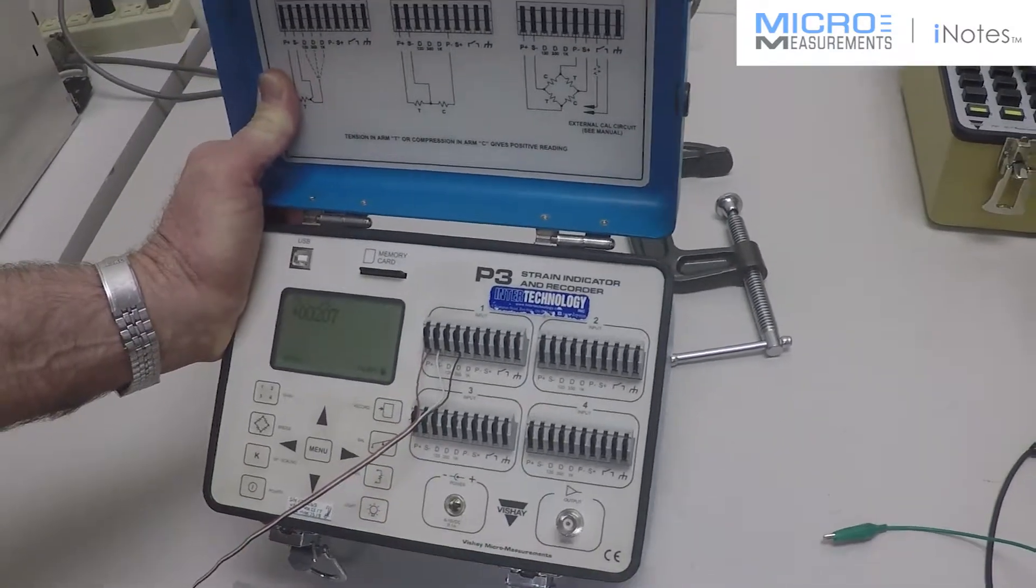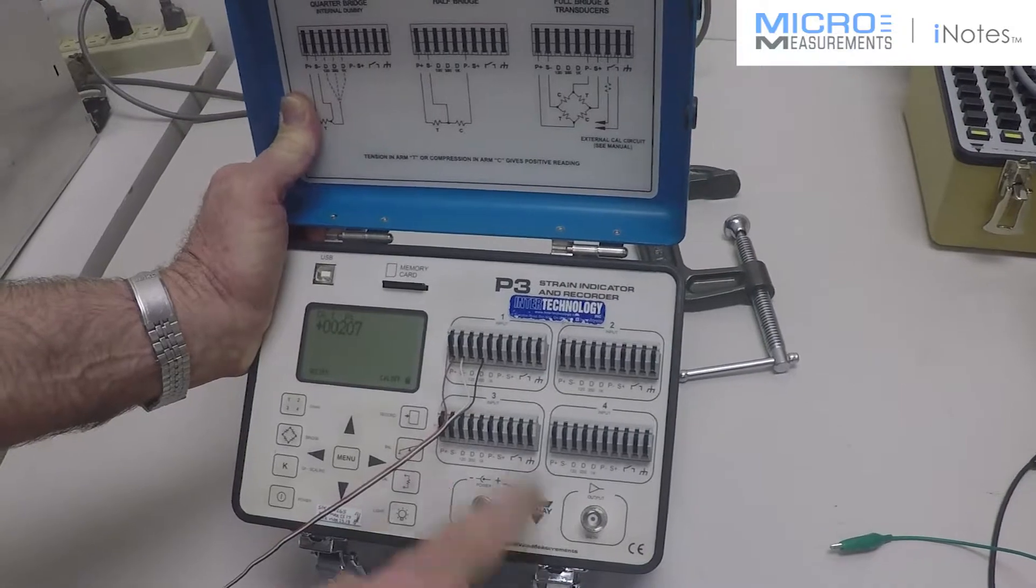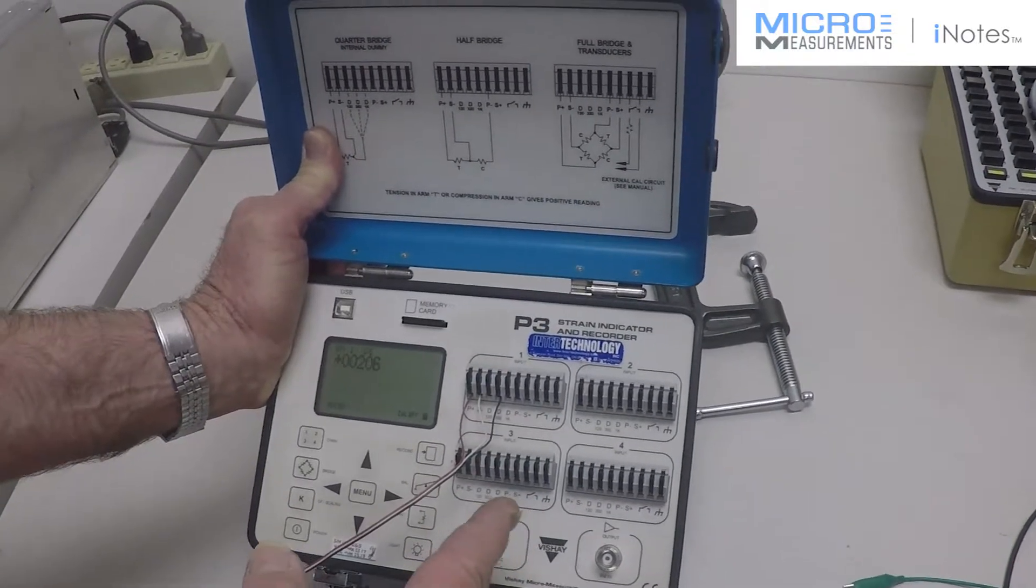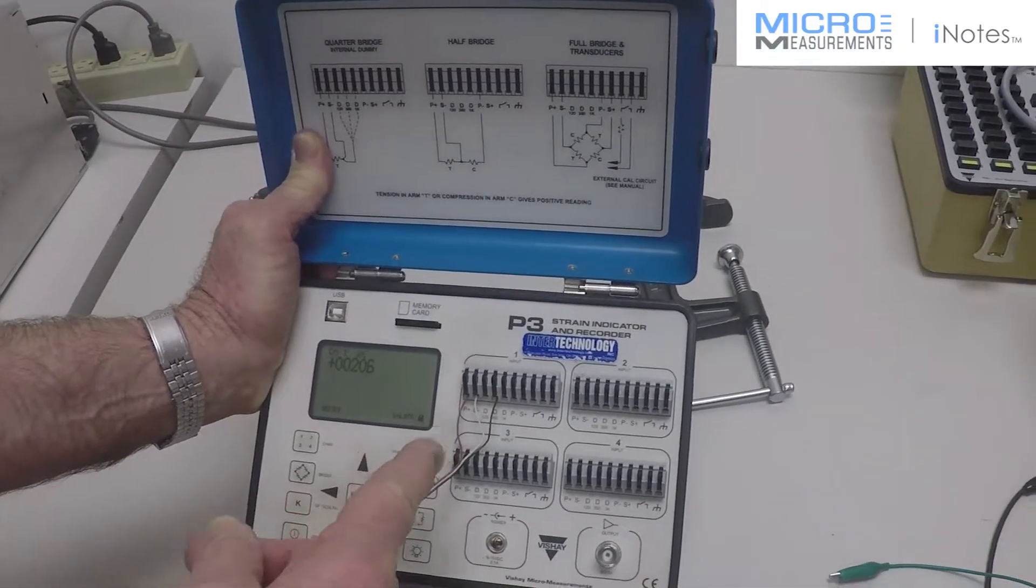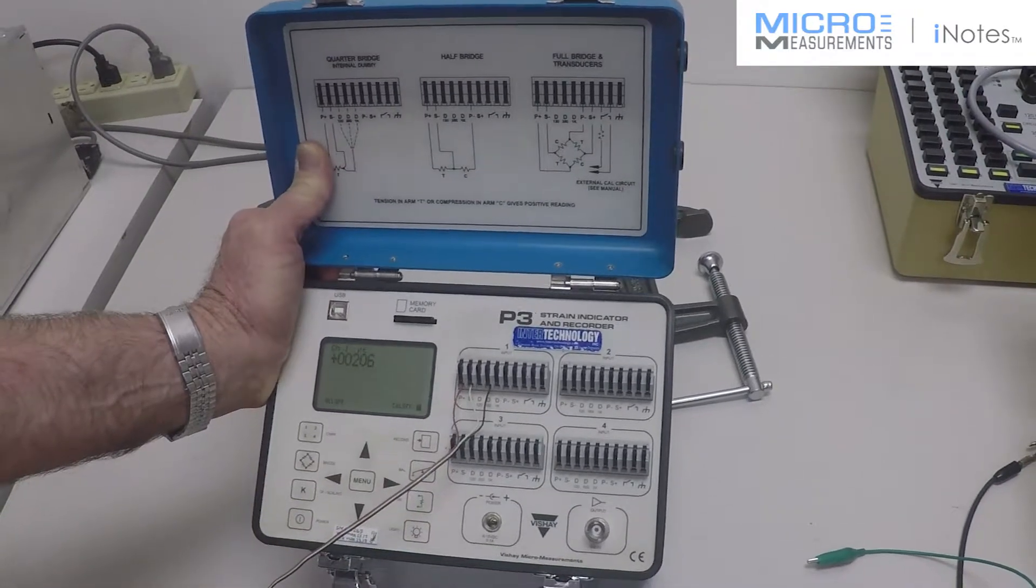We have a quarter bridge here and we have precision resistors built into the unit to complete the bridge, so we can accommodate 120, 350, and 1000 ohm strain gauges directly.